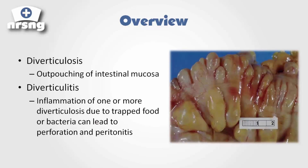What is diverticulosis? Here is an image of a large intestine. What you'll see here is normal mucosa. These outpouchings down here are the diverticuli. Diverticulosis is simply outpouching of the intestinal mucosa, and you can kind of see the difference between the outpouchings and the normal ones. What happens with diverticulosis is these outpouchings develop along the intestinal mucosa. This is not a big deal.